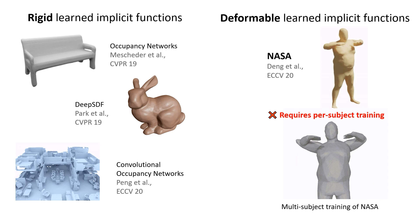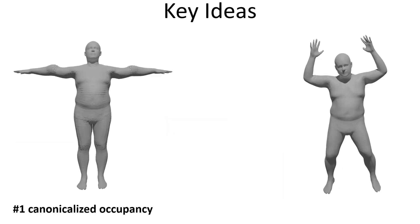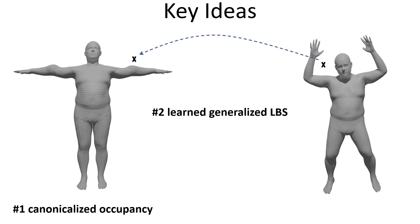We follow the good practice of traditional body modeling techniques and build our occupancy model in the canonical pose. Our second idea is to learn a generalized linear blend skinning function to transform any query point to the canonical space, where we can conveniently perform a reliable occupancy check.